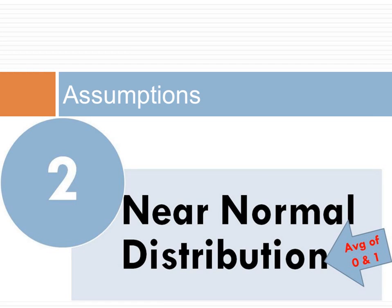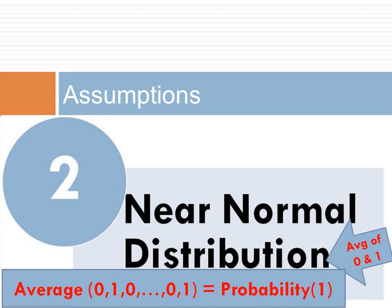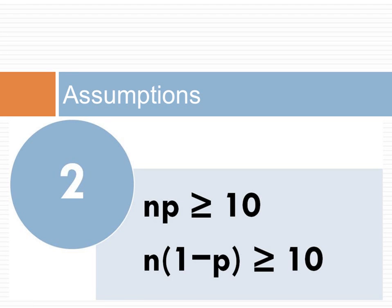The second assumption is that the distribution of the rate is near normal. A rate can be considered the average of the observations. If observations are scored as 1 when it succeeds and 0 otherwise, this average is assumed to have a normal distribution. The assumption of normal distribution is reasonable when there are at least 10 successes and 10 failures in our sample.